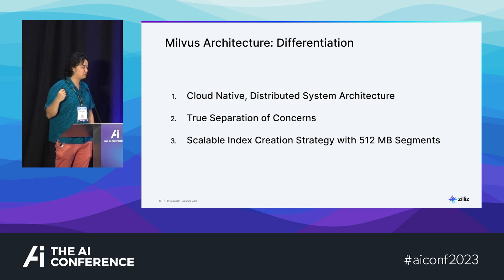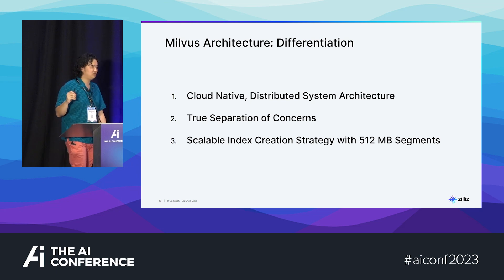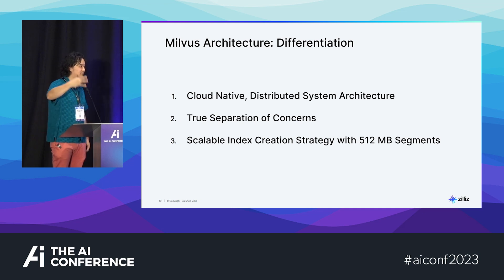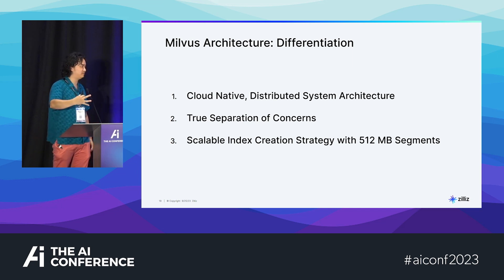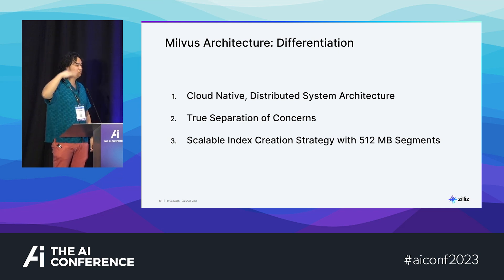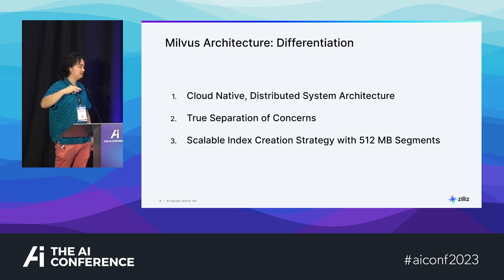We also have scalable index creation. Milvus uses an interesting index strategy where we index only 512 megabytes at a time. We're constantly building indexes as we ingest data, and at query time we do parallel searches across all of these. Imagine you have 100 gigabytes of data — would you rather search it linearly, or do 200 parallel searches that coalesce at the end over 512 megabyte chunks? The latter gives you near constant search time.